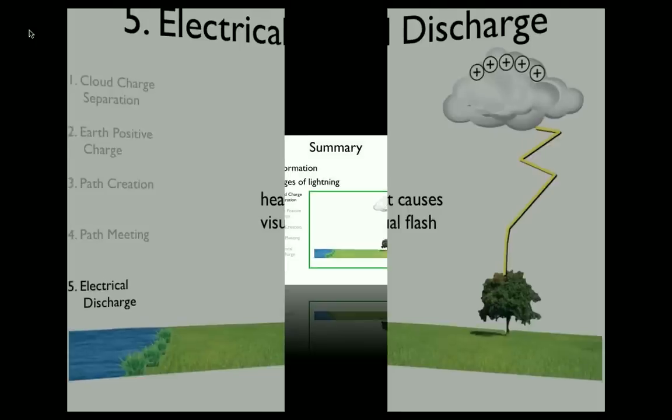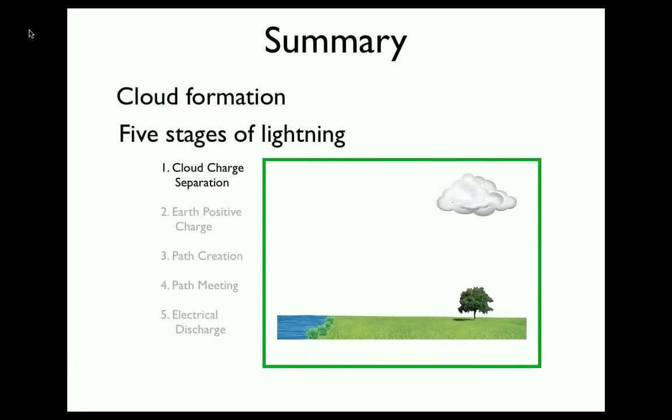Now in summary, remember, after the cloud is formed, the electrical charges in the cloud separate because of opposing upward and downward winds. Next, the negative charges on the cloud bottom cause the Earth to acquire a positive charge. In the third stage, two conductive paths are formed, a step leader and a streamer, and these paths meet.